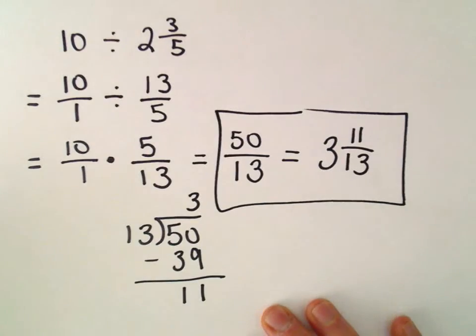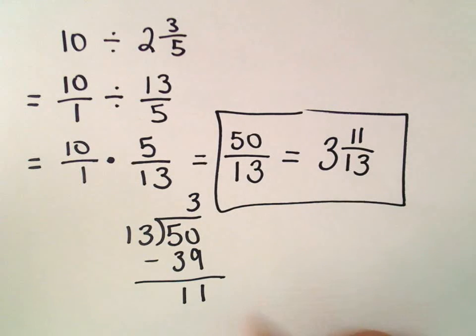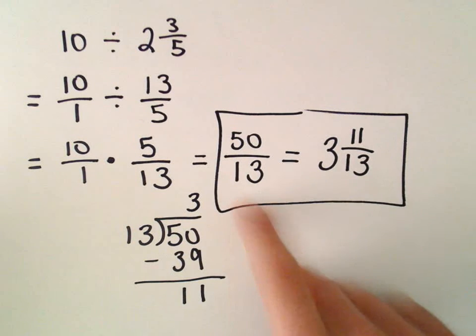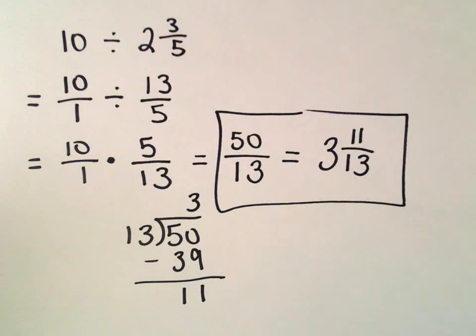So either one of those would be correct — the improper fraction 50 over 13, or written as the mixed number 3 and 11 over 13.